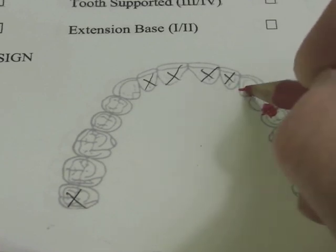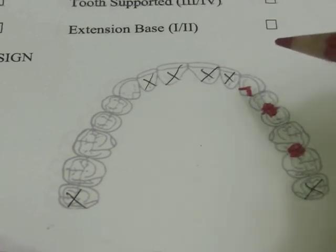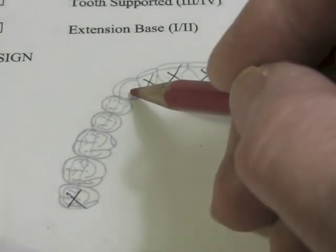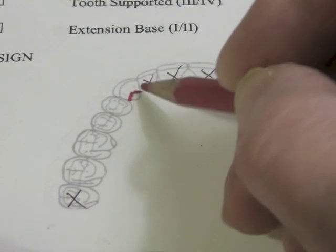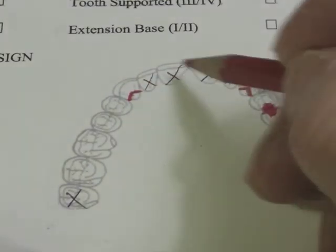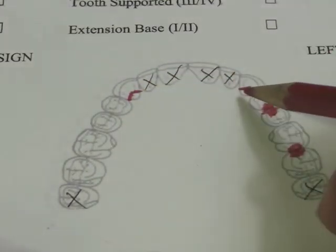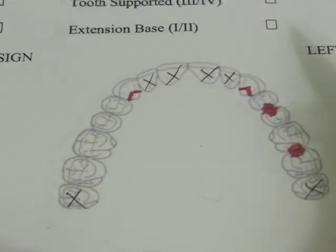So on the maxillary arch, the canines are quite prominent on the cingulum area and we can actually cut a cingulum rest. So we have to have support next to or near this edentulous area. So we will have rest on our canines.